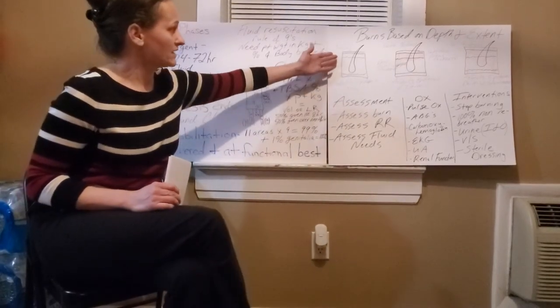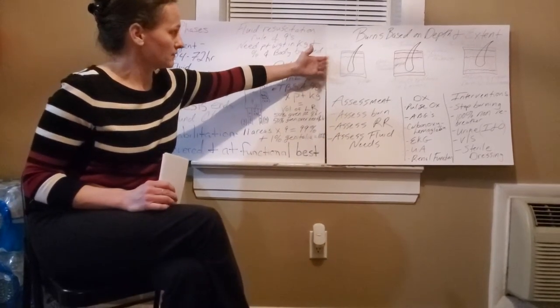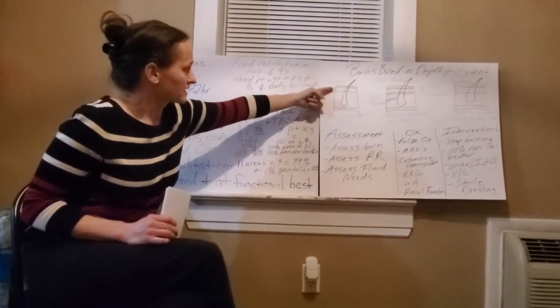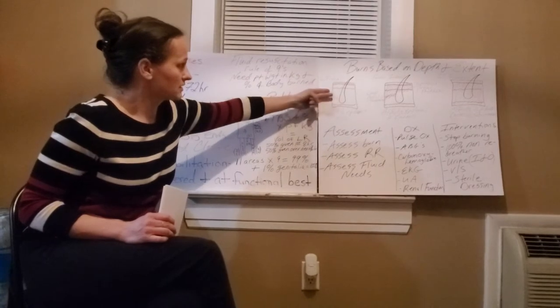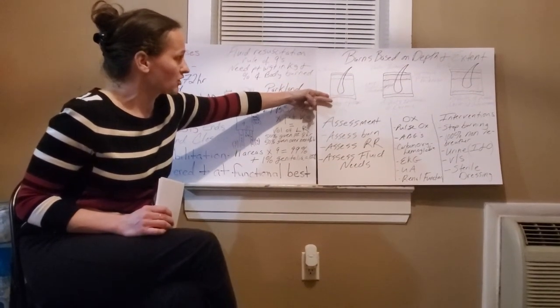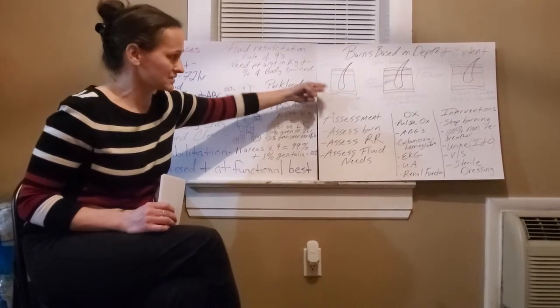If you look up here, I have a diagram of a superficial burn, and here are the layers of the skin. The outermost layer of the skin is our epidermis, which is affected, and then here's the dermis, and here's our lower layer, the subcutaneous layer of our skin.